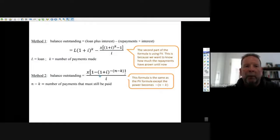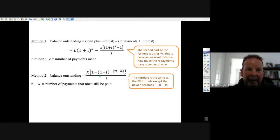Okay, we're going to look at how to work out an outstanding balance. There are two different ways to work out an outstanding balance, how much you owe on the loan. The first way is to take the value of the loan and multiply it by one plus i to the k, whatever number of payments that have been made, and then subtract the future value.